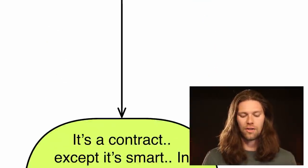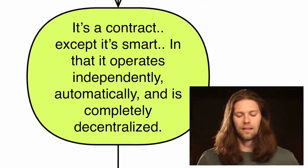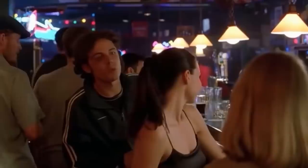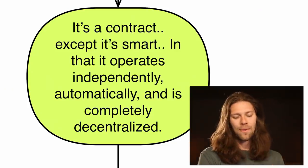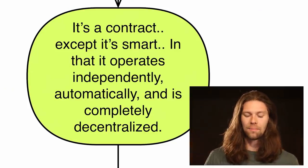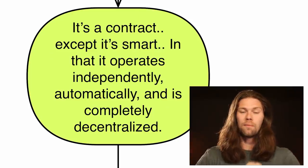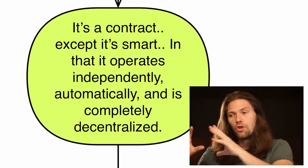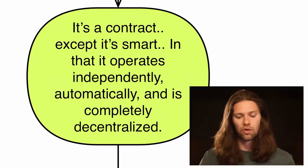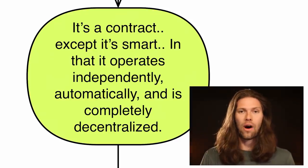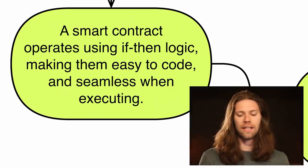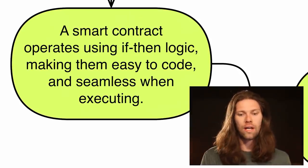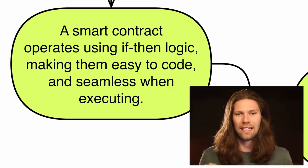So what are smart contracts? A contract, except it's smart, in that it operates independently, automatically, and completely decentralized from any outside entity. There is no one entity or person controlling how the smart contract executes after the agreement has been made. A smart contract operates using if-then logic, making it easy to code and seamless when executing.